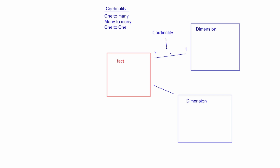We're also going to look at filter direction. Typically we have a filter arrow in the direction from the one side to the many side. Think of the arrow like a pipe — water flows through that pipe in the direction the arrow is pointing. So the dimension table filters the fact table, and this is known as a single filter direction.